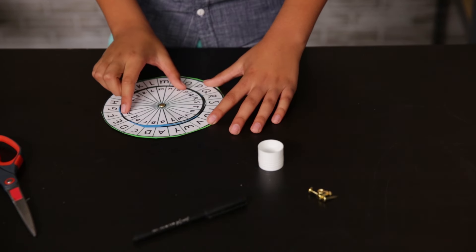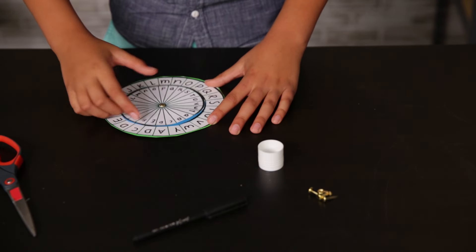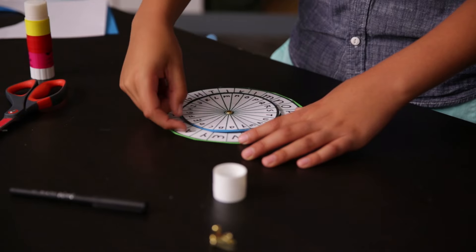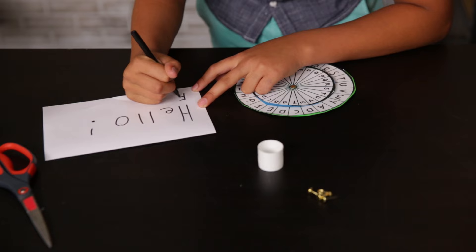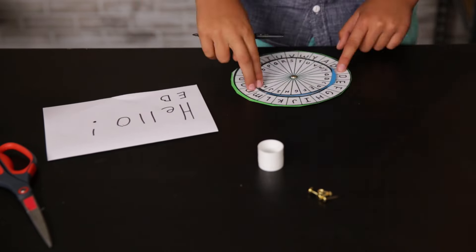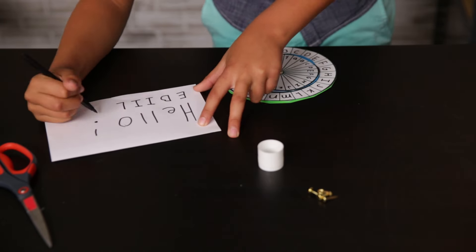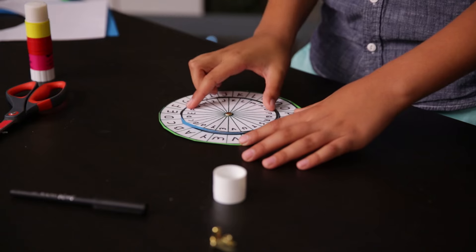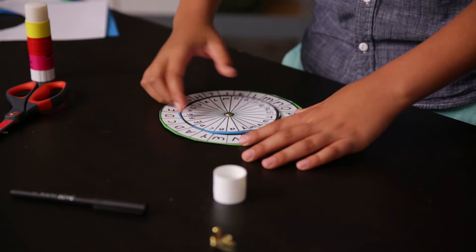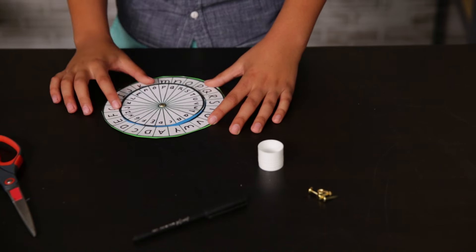To create a secret message, all you have to do is turn the small circle. For instance, if you turn it three spaces, the smaller circle will line up the letter D with the letter A. Write your message from what they would be on the big circle to what they are on the small circle. So in this case, the word hello becomes KHOOR. Tell your friend only two letters that match, for example D equals A. Then you can pass secret messages back and forth that no one else can read.